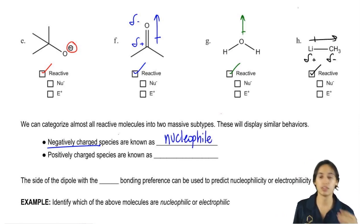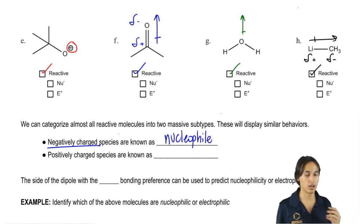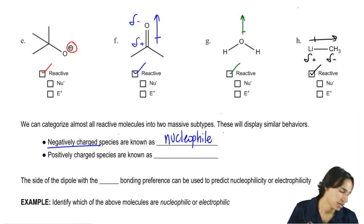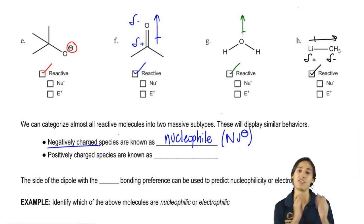And the way that I'm going to, for this course, abbreviate nucleophile is I'm often going to write Nu negative. And that stands for the fact that I have a negatively charged atom or a negatively charged part of a molecule.